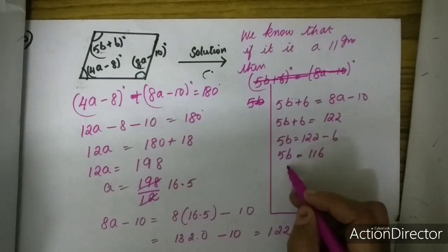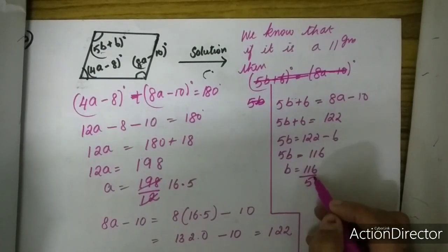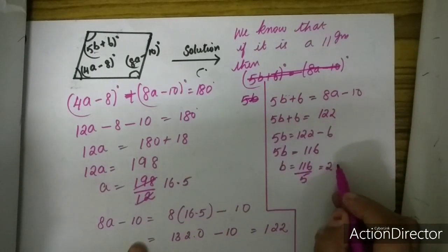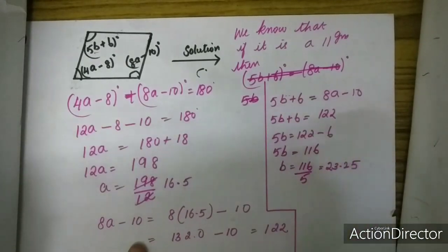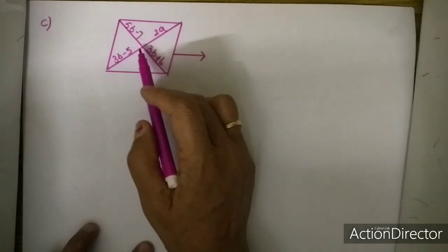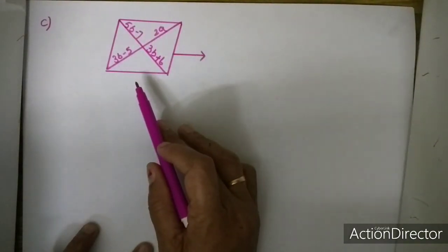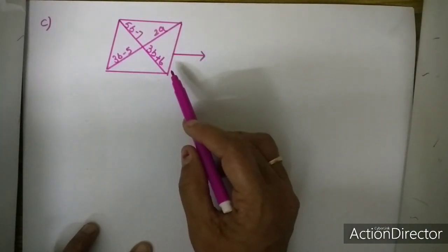5B is equal to 116, so B is equal to 116 upon 5, which is equal to 23.2. We will now move on to the next sum. This quadrilateral will be a parallelogram if the diagonals bisect each other.